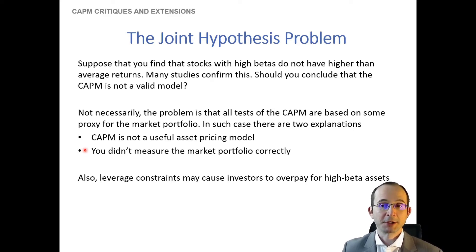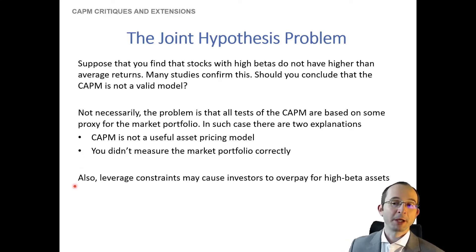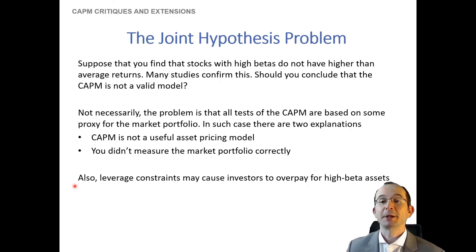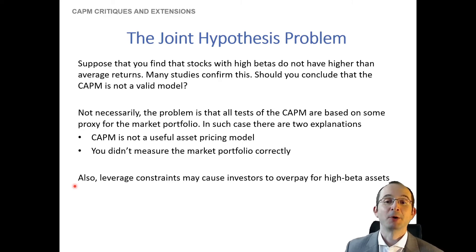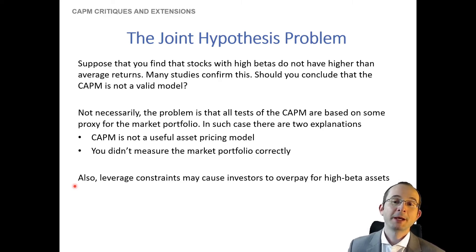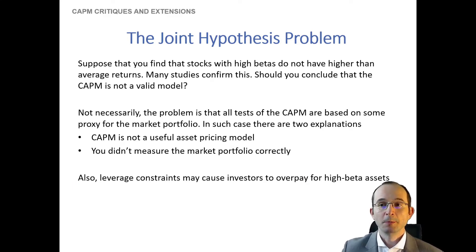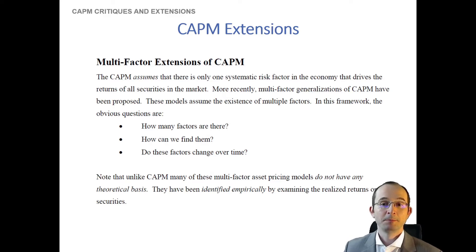Another strain of literature, most recently exemplified by a 2014 paper by Frazzini and Pedersen, suggests that one reason the CAPM might not work empirically is that investors are leverage constrained. The CML does have that kink in it, and therefore investors who cannot borrow overpay for high beta stocks as an alternative way to get higher leverage. If they overpay, high beta stocks then have less than their fair expected return. Whether the underperformance is due to implementation issues or CAPM inaccuracies, researchers have found you can measure expected returns better by accounting for additional factors, creating a multi-factor extension of the CAPM.